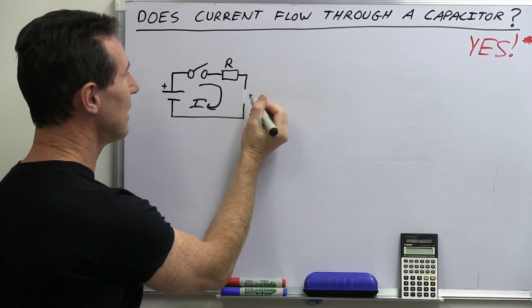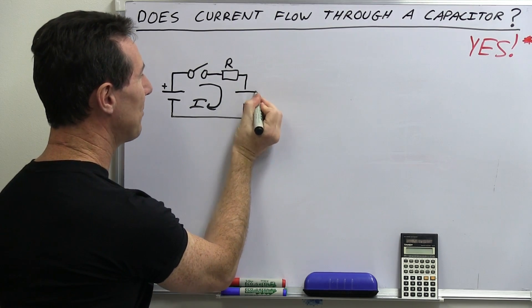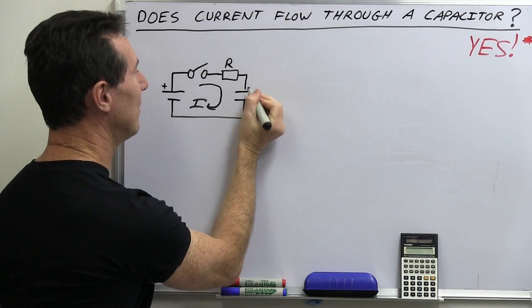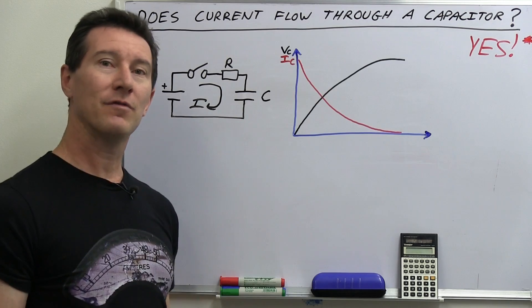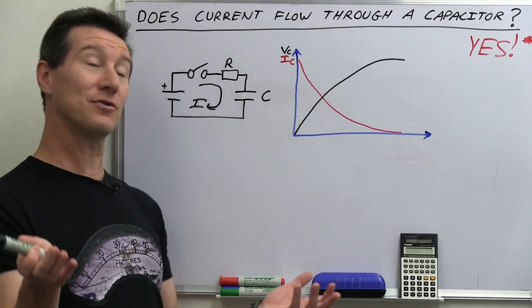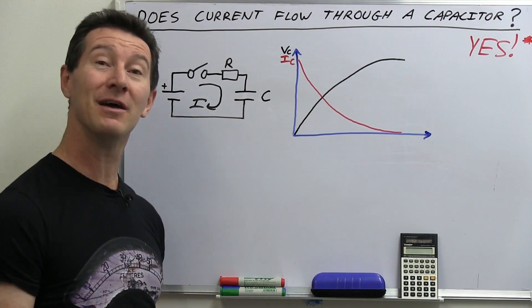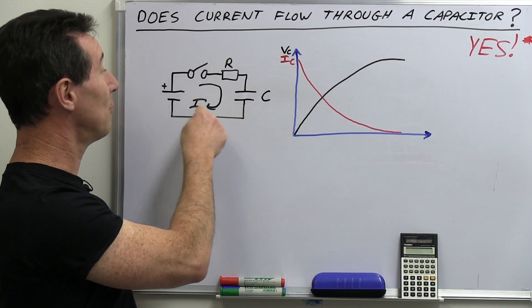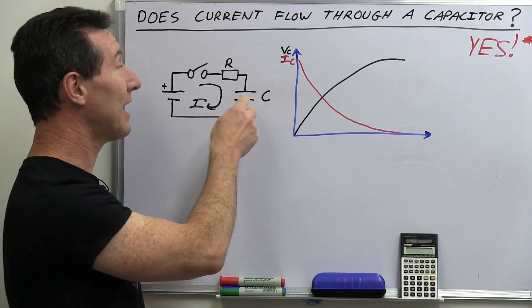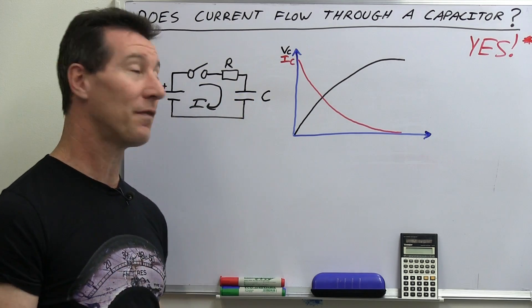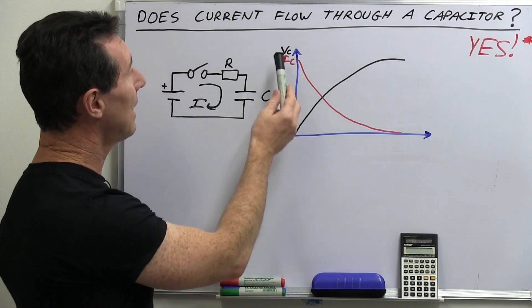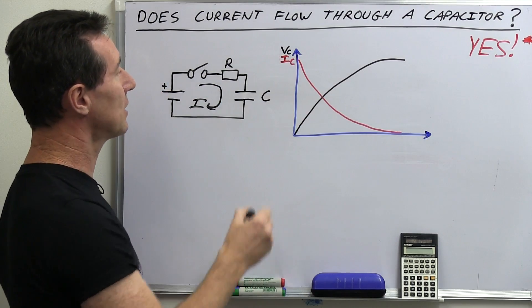But what happens if we put a capacitor in here like this? Well, of course, that's very easy too. In fact, it's almost insulting. You know what happens. The capacitor charges up, current still I still flows in the circuit, and it charges up a voltage on that capacitor. In this case, VC, the voltage across the capacitor.